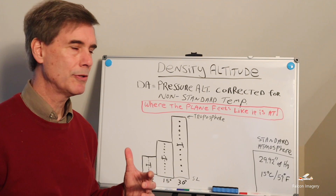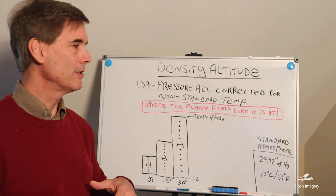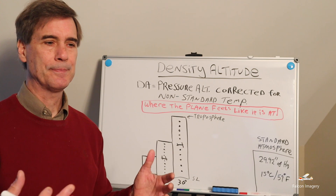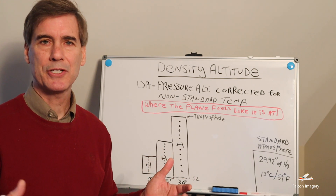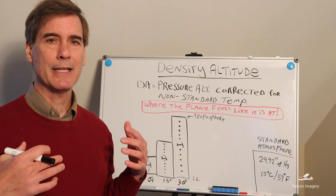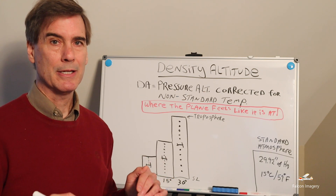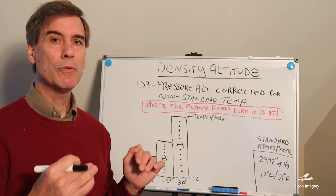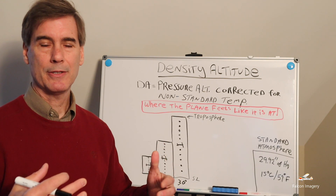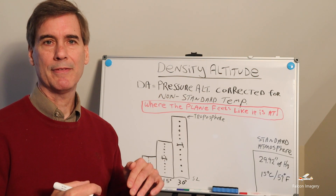Density altitude is pressure altitude corrected for non-standard temperature. The best way to describe it is that density altitude is what the plane feels like it's performing at. For example, if the airport elevation was 1,000 feet above sea level normally, and you get a report from the AWOS saying that the density altitude is 3,000 feet, basically that plane is going to take off as if it truly was performing at 3,000 feet up in the air already. As you go higher in elevation, the performance of the aircraft diminishes.